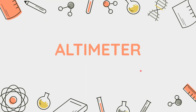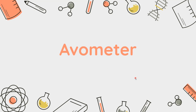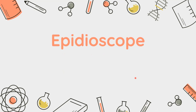Next is the Altimeter. Altimeter is used to measure the altitude of an aircraft. Next is the Avo Meter. It is used to detect a fault or a defect in the radio.